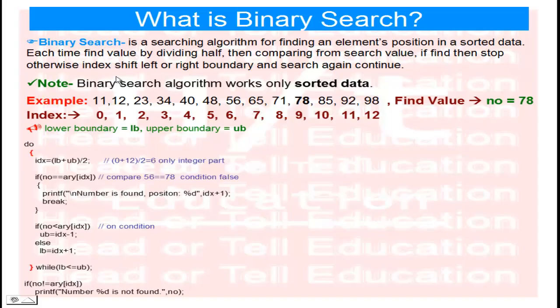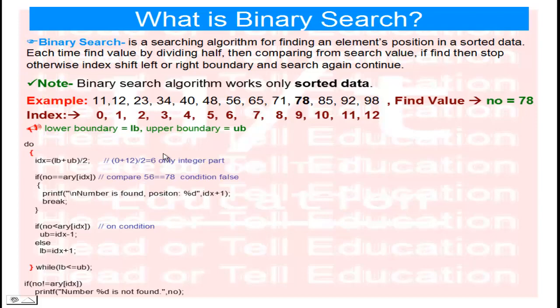An important note: the binary search algorithm works only on sorted data — the data must be in sorted order. Here I am writing the code in C language, but you can write the code in any language like C++, Python, or Java. The algorithm of binary search is the same in all languages.